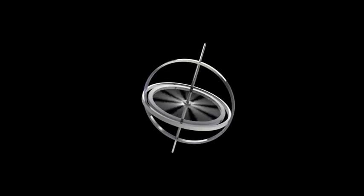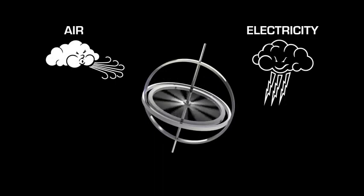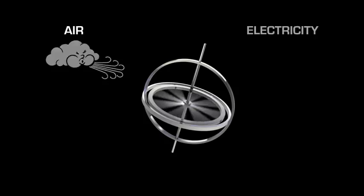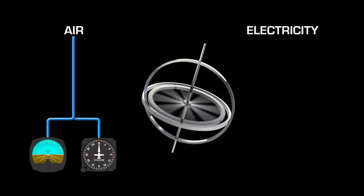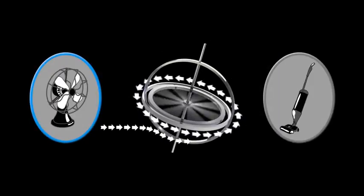In order for gyroscopic instruments to work, the gyros have to spin at a very high speed. As previously stated, the instruments can either be powered by air or electricity. For safety reasons, different instruments are powered by different sources so that if one source fails, the other source will still work. The attitude and heading indicators are typically powered by air and the turn coordinator powered by electricity.